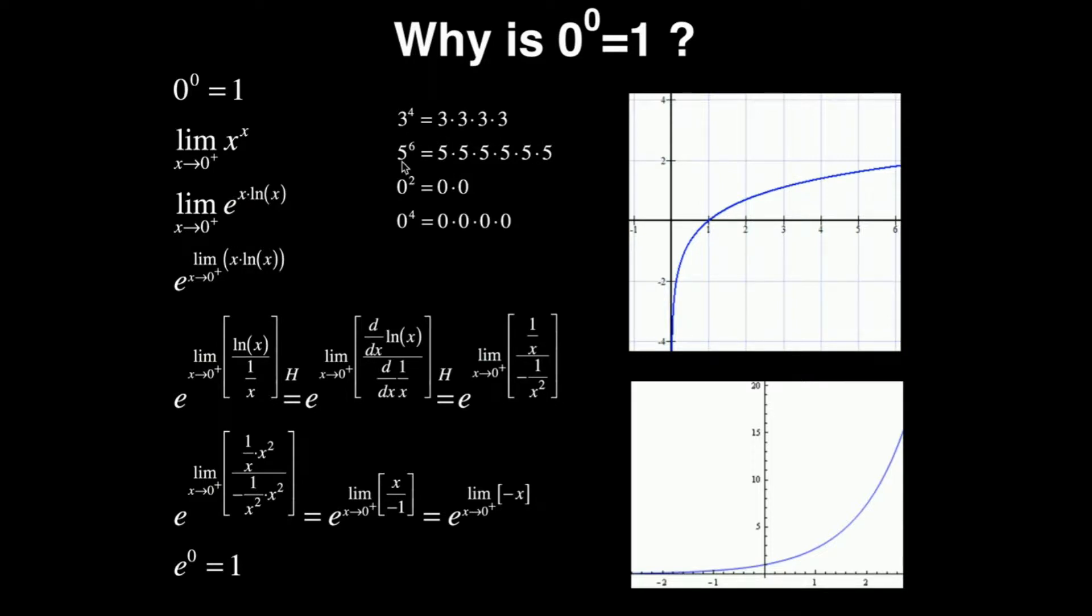If I have 5 to the 6th power, that means I'm going to multiply 5 times 5, and I'm going to do that 6 times. So here I have 5 6's multiplied together, so on and so forth.